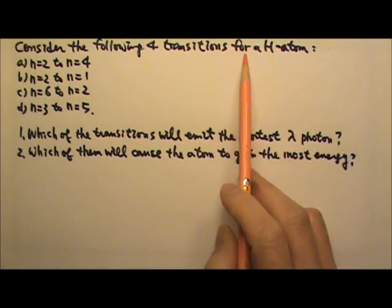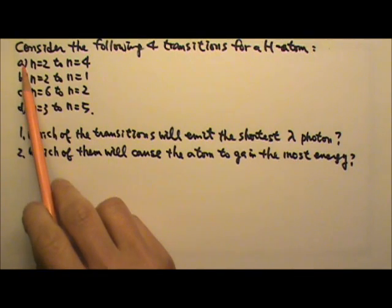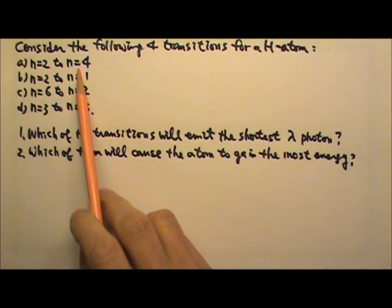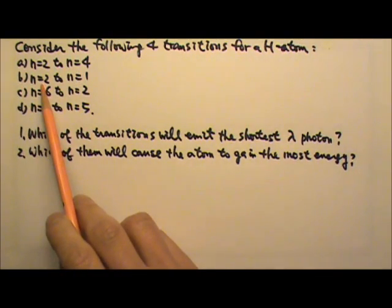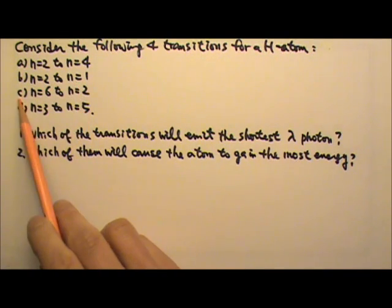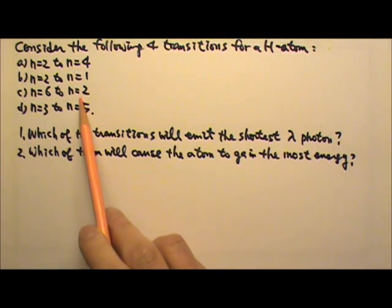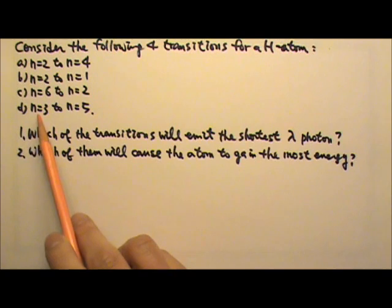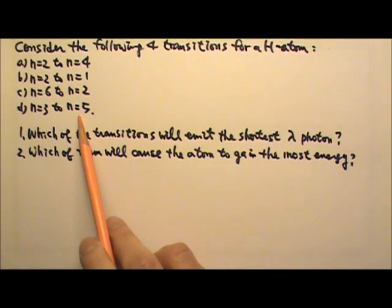Consider the following four transitions for a hydrogen atom: a) n=2 to n=4, b) n=2 to n=1, c) n=6 to n=2